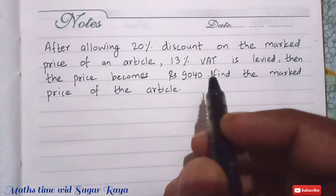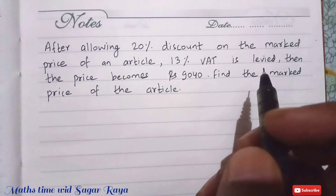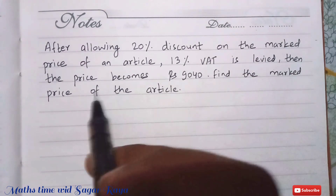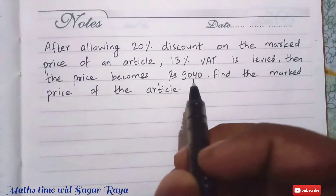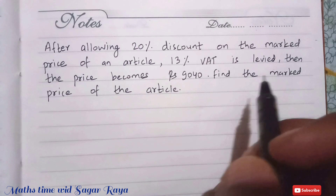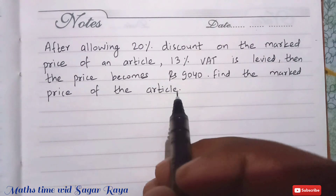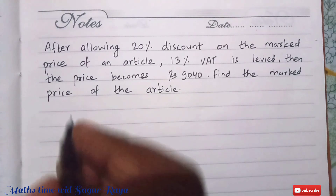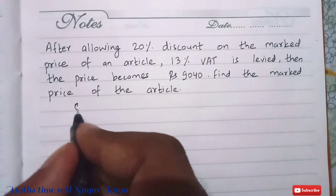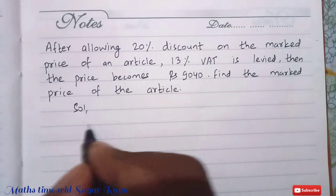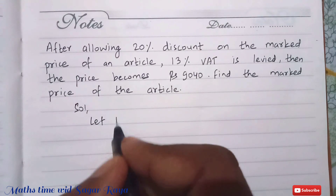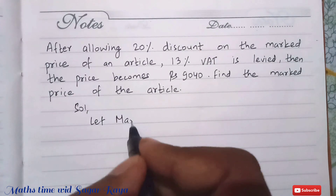After allowing a 20% discount on the mark price of the article, 13% VAT is levied, then the price becomes rupees 9,040. Find the mark price of the article.